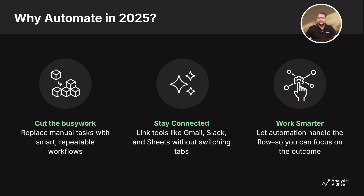Why is there a need for automation? Automation is necessary in order to achieve three objectives. Firstly, reducing the workload — automation can replace a lot of manual work we do. Second, staying connected and performing actions in real time; suppose you want to answer your mails in real time, this is hard to achieve without automation. Thirdly, automation is also necessary to make us smarter — it can take care of the whole workflow and you just need to focus on the outcomes.